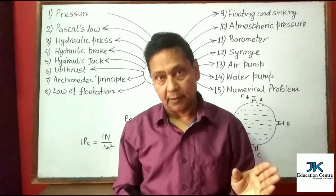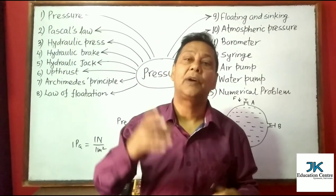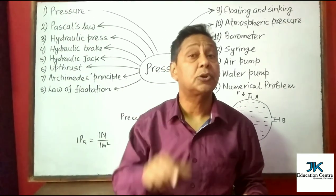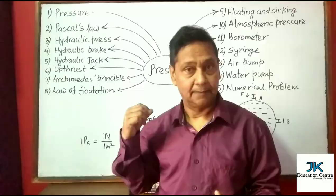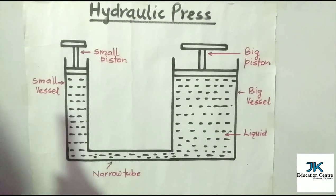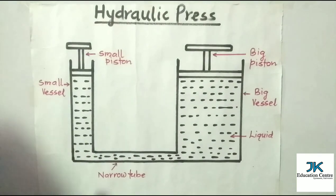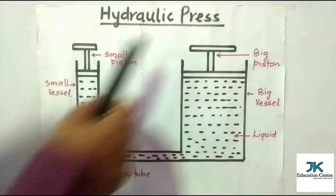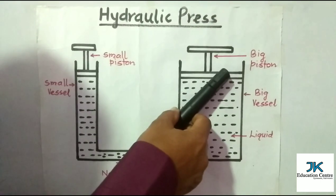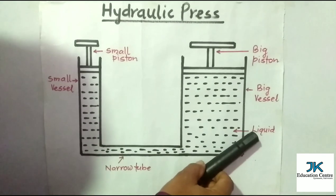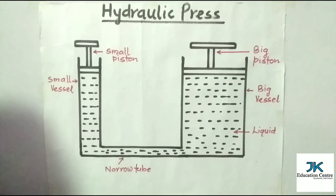What is a hydraulic press? It is a device based on Pascal's law which is used to magnify force. Regarding its construction: in a hydraulic press, a small vessel is connected to a big vessel by means of a narrow tube. Each vessel is fitted with a piston — one piston is small and another is big — and the vessel is filled with a liquid.